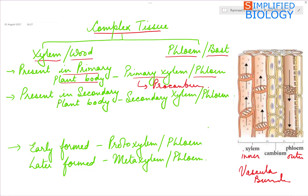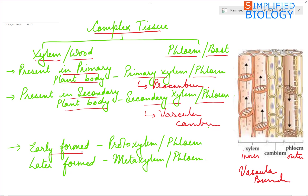While the xylem and phloem present in the secondary plant body are referred to as secondary xylem and secondary phloem, formed from vascular cambium. Early-formed xylem or phloem is known as protoxylem and protophloem, while later-formed is known as metaxylem and metaphloem.